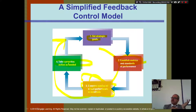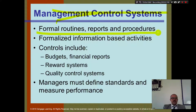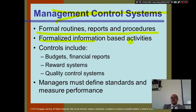The computer system helps us do that. Management control system: you have formal routine reports and procedures. For example, for the bank every year they have to produce an annual report from the computer information systems they have. They get reports, maybe procedures on how to do it — formalized information based on your activities.